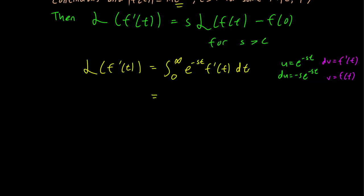So we have u dv, and this should be equal to uv minus the integral of v du. So let's write that all down. We get e^(-st) f(t) evaluated from 0 to infinity, minus the integral from 0 to infinity of f(t) times (-s e^(-st)) dt.